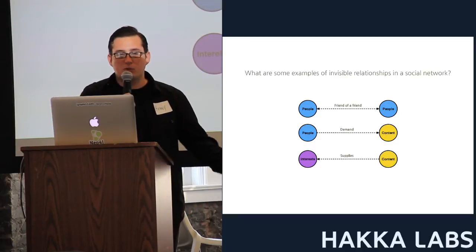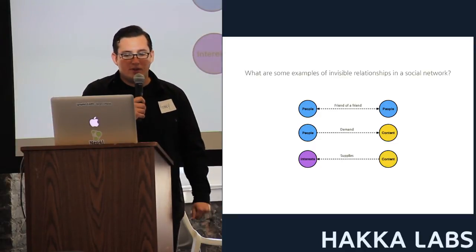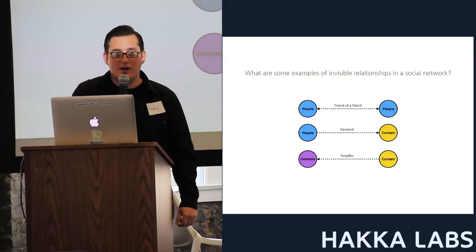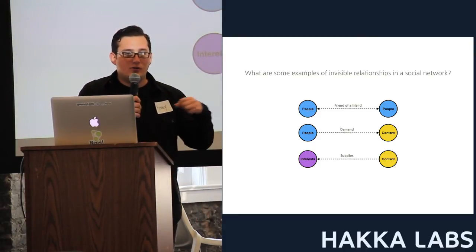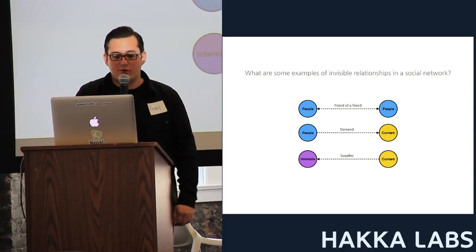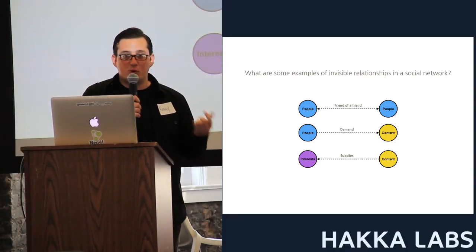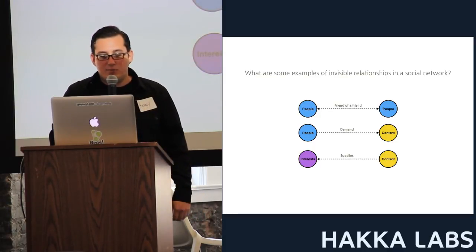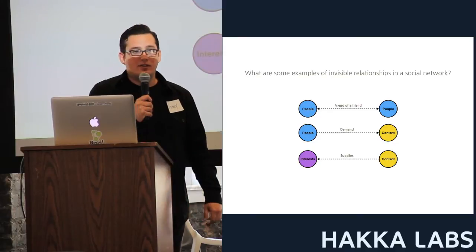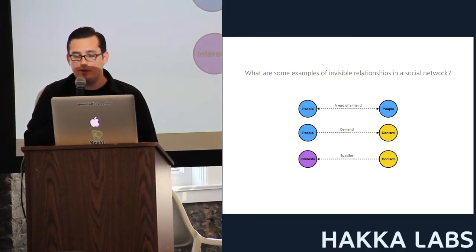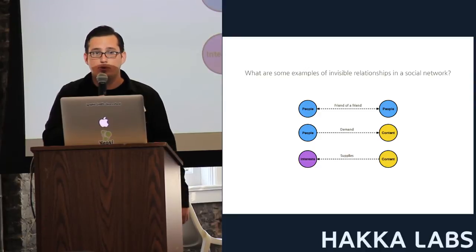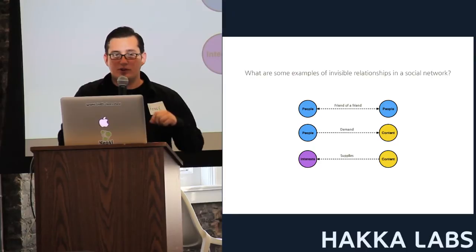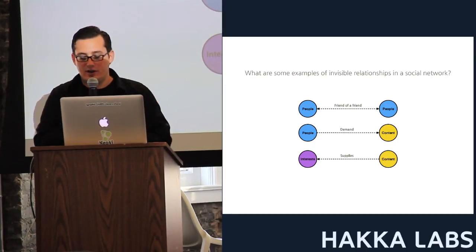What are some examples of invisible relationships in a social network? The classic example is friend-of-a-friend — you have a network of people and can have a friend in common with someone else. That friend-of-a-friend relationship is an invisible relationship, easy to do in Neo4j. Today you have people demanding content — how do you predict that? That's what I'll be answering using an actual Cypher example. You also have content which supplies interests.